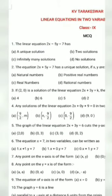Number 1. The linear equation 2x minus 5y equal to 7 has — they have given 4 options: unique solution, infinitely many solutions, two solutions, no solution. A linear equation must have a unique solution, so option A will be correct.